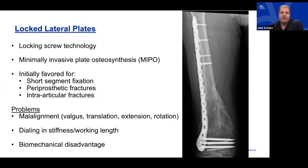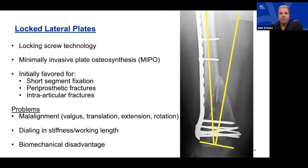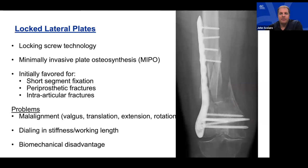One challenge is that simply applying a locked plate didn't give us the results we hoped for. When we forget about dialing in alignment and understanding mechanical and anatomic axes, the plate can be applied incorrectly leading to bad malreductions, non-unions, and implant failure. Understanding biomechanics and working length with large metaphyseal comminution is problematic because a laterally based implant is at a biomechanical disadvantage.